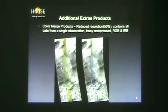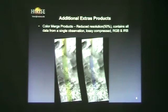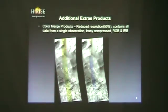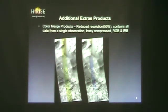Our last set of standard extra map-projected products is where we merged all of the panchromatic red CCDs with the color strip down the center and map projected it. We generate two different products: an RGB merged product similar to the no-map with the red channel, blue-green, and the synthetic blue; and on the right is the IRB, which is similar to the no-map but with a slightly different stretch, using panchromatic red with the IRB filters — red and the blue-green filters.